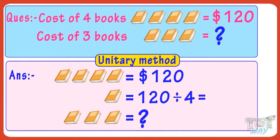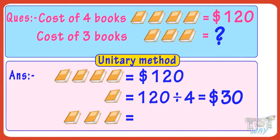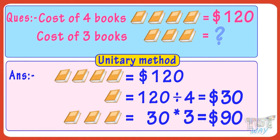And 120 divided by 4 equals 30. So the cost of one book is $30. Now we can easily find the cost of three such books. It will be 30 multiplied by 3, which equals 90. So the cost of three books will be $90.